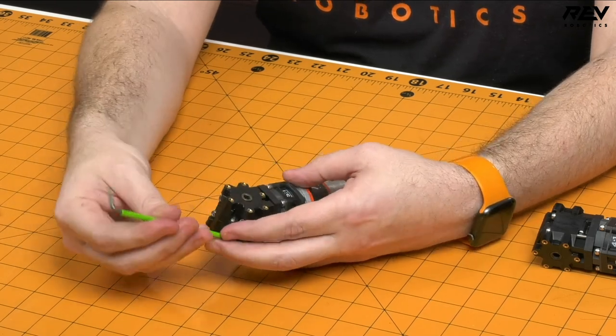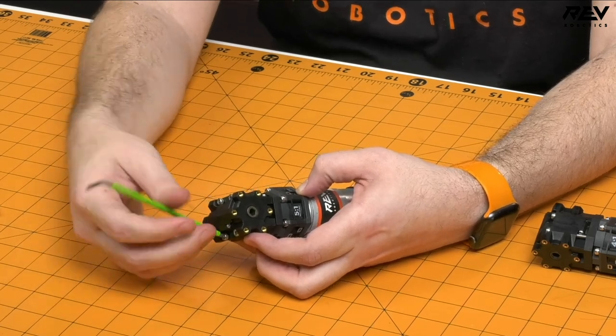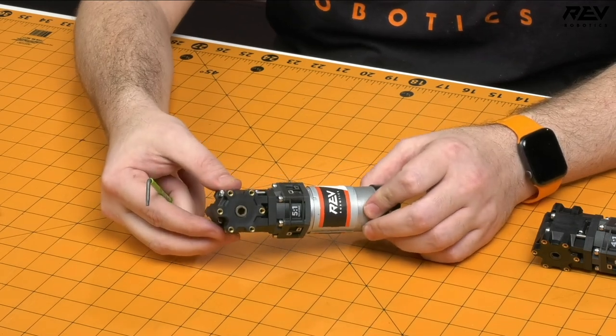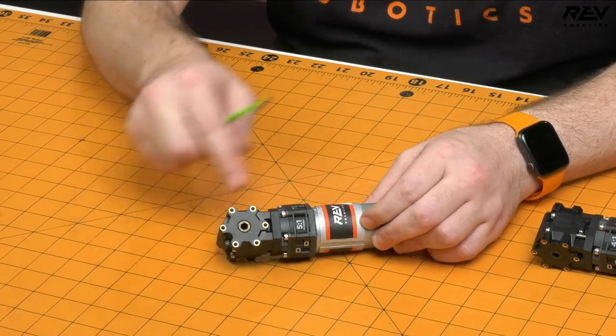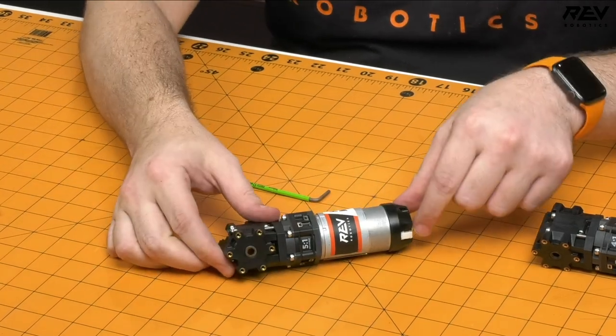Now if you need to change the gear ratio on your ultra planetary, you will have to take this off, but it's pretty easy to just put this back on. So that leaves you with this assembly that, as you can see, gives you that nice angular output of your HD hex motor.